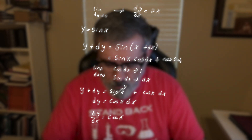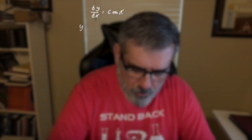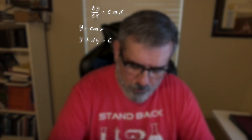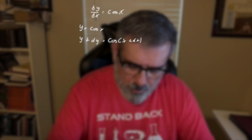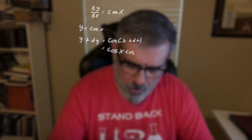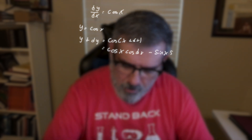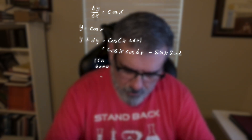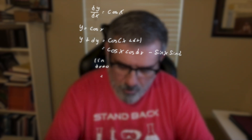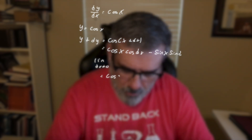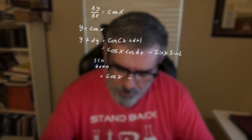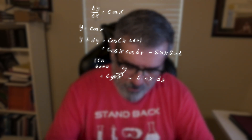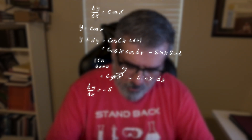Let's do the same for y equals cosine of x. We write y plus dy equals cosine of (x plus dx), which expands to cosine of x times cosine of dx minus sine of x times sine of dx. Taking the limit as dx approaches 0: cosine of dx goes to 1, so we get cosine of x minus sine of x times dx. Since cosine of x is y, the y terms cancel, leaving dy over dx equals minus sine of x.